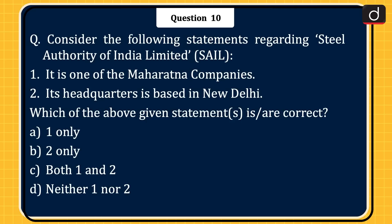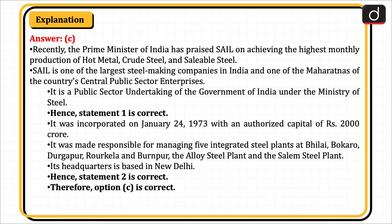Last question: consider the following statements regarding Steel Authority of India Limited or SAIL. Statement 1: It is one of the Maharatna companies. Statement 2: Its headquarters is based in New Delhi. Which statement(s) is/are correct? The correct answer is option C, both 1 and 2. Recently, the Prime Minister praised SAIL on achieving the highest monthly production of hot metal, crude steel, and saleable steel. SAIL is one of the largest steel-making companies in India and one of the Maharatnas of the country's central public sector enterprises, under the Ministry of Steel. Hence, statement 1 is correct.